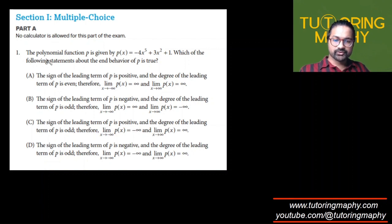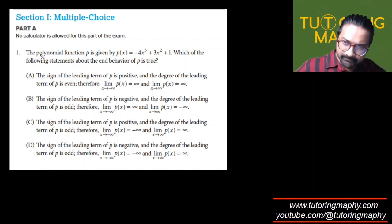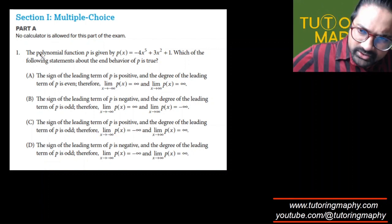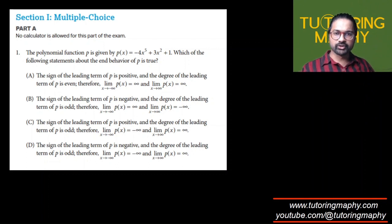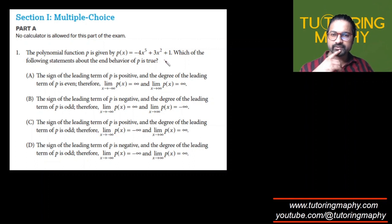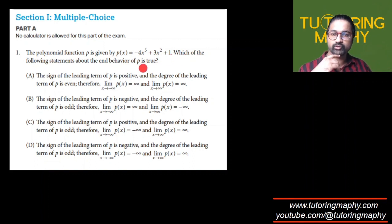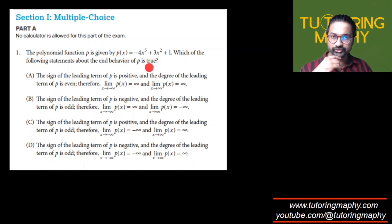Let's talk about the first question. They are talking about polynomials — the polynomial function p is given by negative 4x raised to the 5th plus 3x squared plus 1. Which of the following statements about the end behavior of p is true?